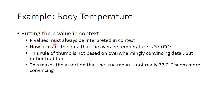P-values always have to be interpreted in context. Just because something is statistically significant doesn't mean it's clinically worth a hill of beans. How firm is the data that the average temperature is 37 degrees centigrade? Perhaps our null hypothesis was not very good to begin with. What you'll find is the rule of thumb is not based on overwhelming convincing data, but rather tradition — 37 is a lot easier to remember than 36.82. A lot of these normal values come from rounding to more easily memorizable numbers. This would lead us to believe the true mean is probably not really 37 degrees centigrade, but we can use it as a general rule of thumb rather than clinical gospel.